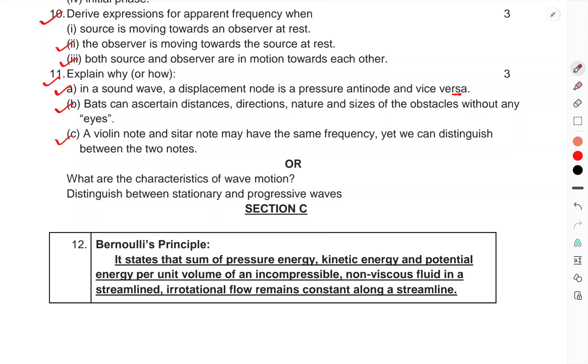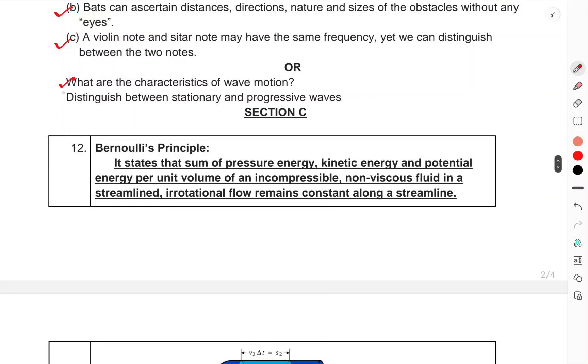(c) A violin note and sitar note may have the same frequency, yet we can distinguish between the two notes. Or, what are the characteristics of wave motion? Distinguish between stationary and progressive waves.